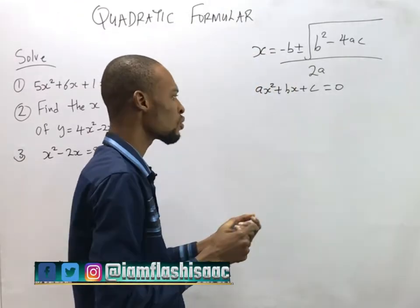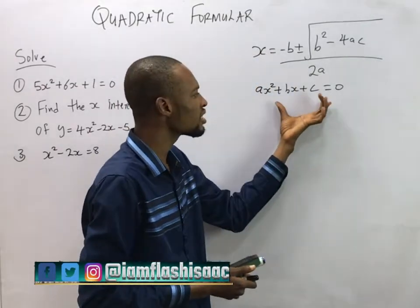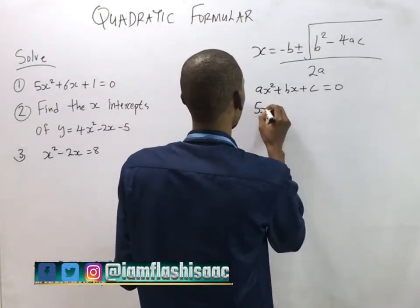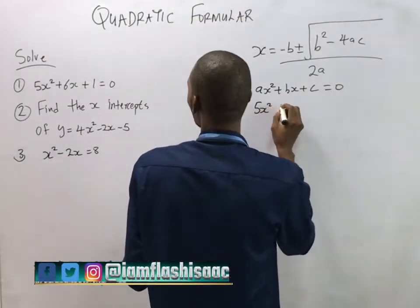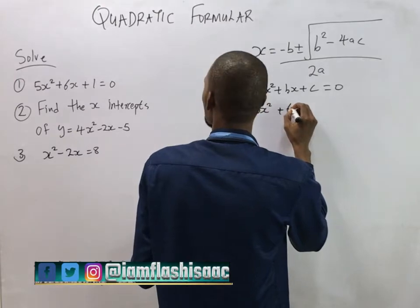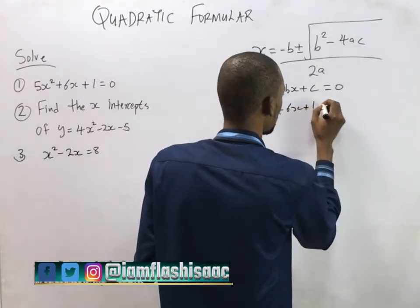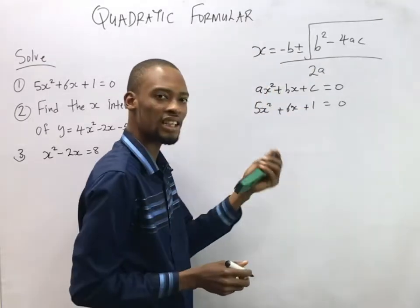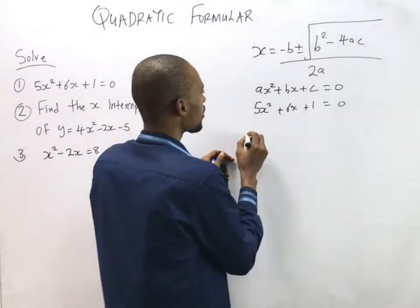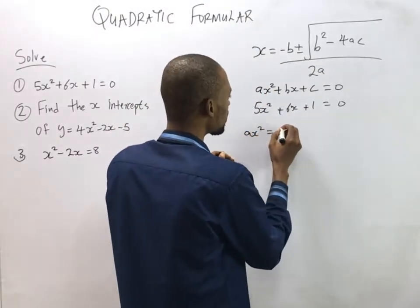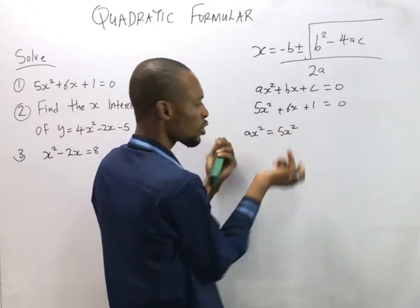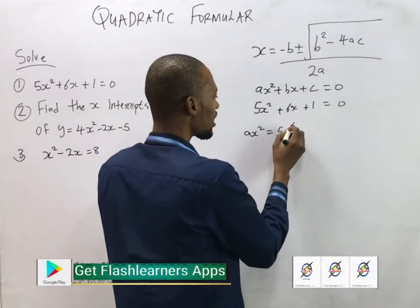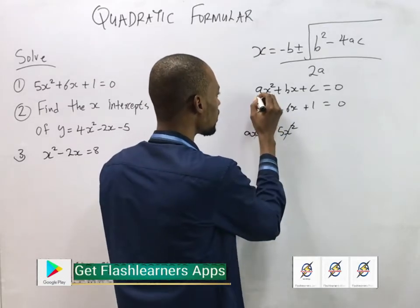So when you are given any quadratic equation, you compare it to this standard form. Let's look at equation one: 5s squared plus 6s plus 1 equals zero. Comparing to the standard form, as squared is the same as 5s squared, so s squared cancels s squared, meaning a is 5.